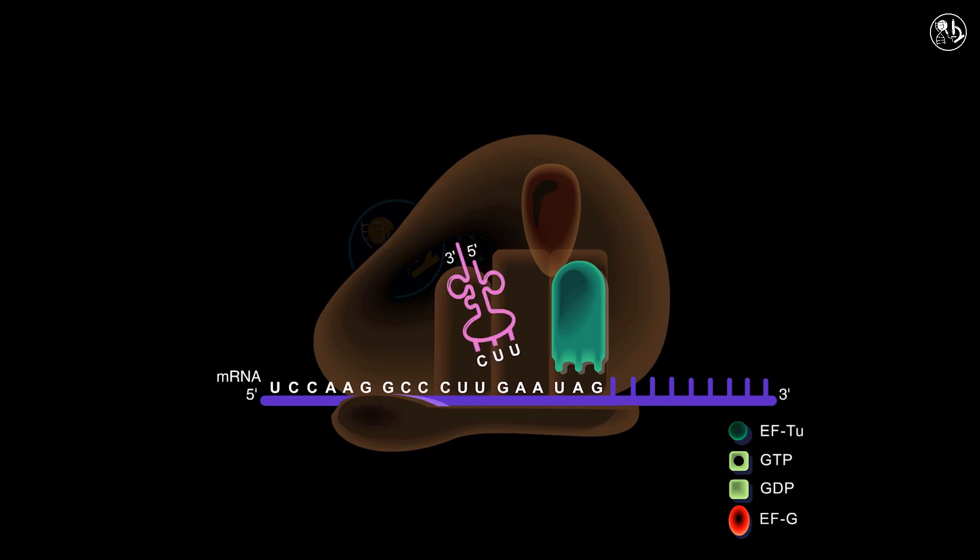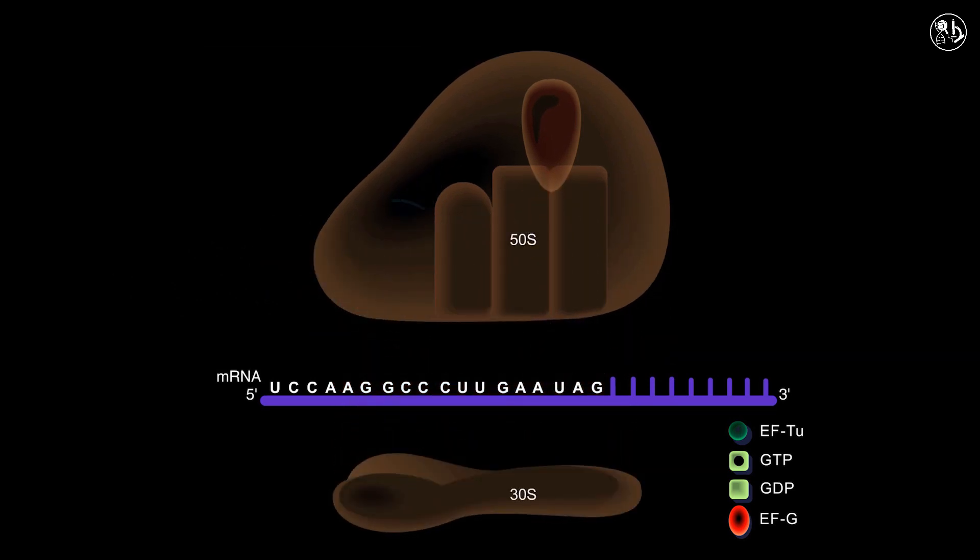Subsequently, the tRNA is removed from the P site of the ribosome, which is then followed by the release of the RF and the disassembly of the 70S ribosome from the mRNA. Finally, the ribosome disassembles into its separate 30S and 50S subunits.